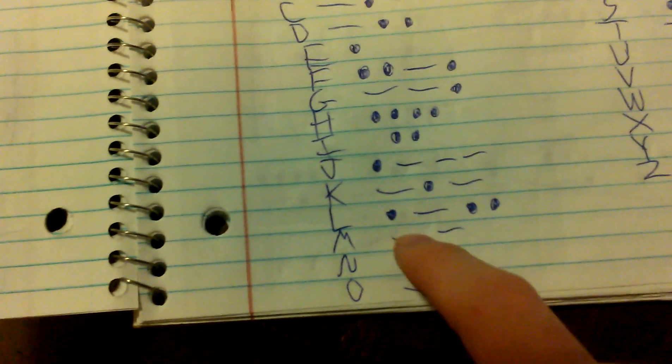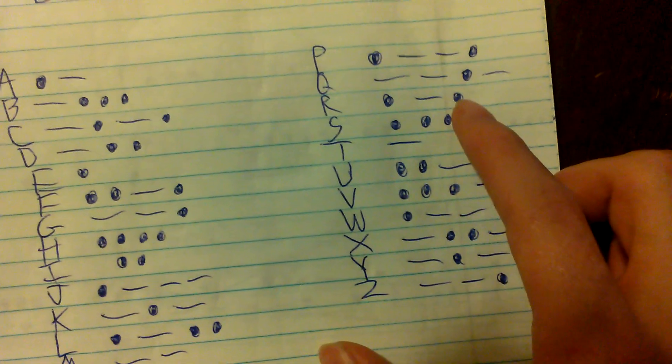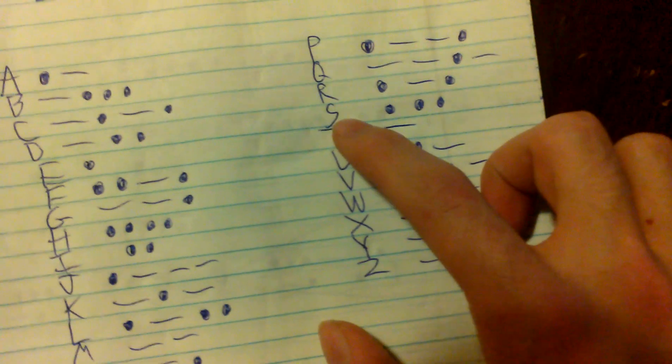An M is dash dash, an N is dash dot, an O is dash dash dash, a P is dot dash dash dot, a Q is dash dash dot dash, an R is dot dash dot, and an S is dot dot dot.